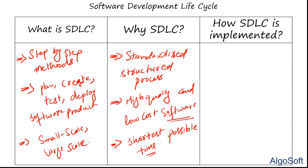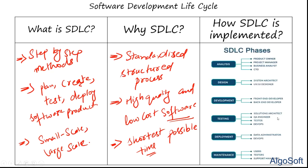SDLC is implemented through six stages: Analysis, Design, Development, Testing, Deployment, and Maintenance. Each stage is designed for a specific purpose. The Analysis stage involves product owners, project managers, CTOs, and business analysts. Design is handled by UI designers and system architects.